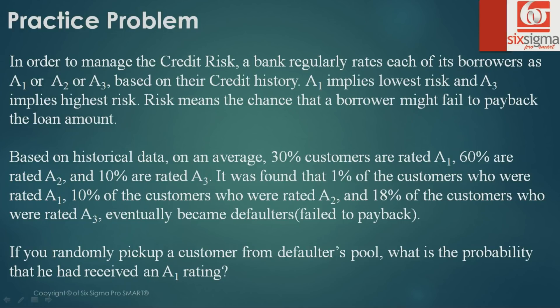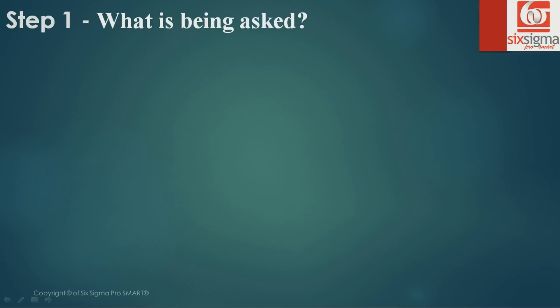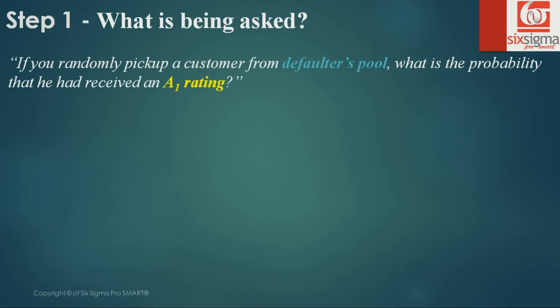What are we expected to solve? If you randomly pick up a customer from the defaulter's pool, what is the probability that he had received an A1 rating? These problems could be really daunting if you read the entire problem and then try to work it out. It'll be better to break it into parts and take a step-by-step approach. Step one: what is being asked?